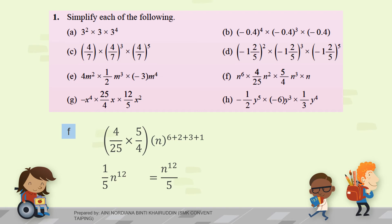Let's move on to question G. This is the coefficient for negative x to the power of 4, 25 over 4, 12 over 5. So, this first. This is the final answer.